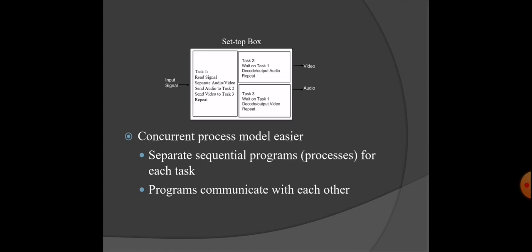Doing this with a sequential process would be more difficult. The concurrent process model is easier because it separates the sequential program for each task, and these programs communicate with each other.